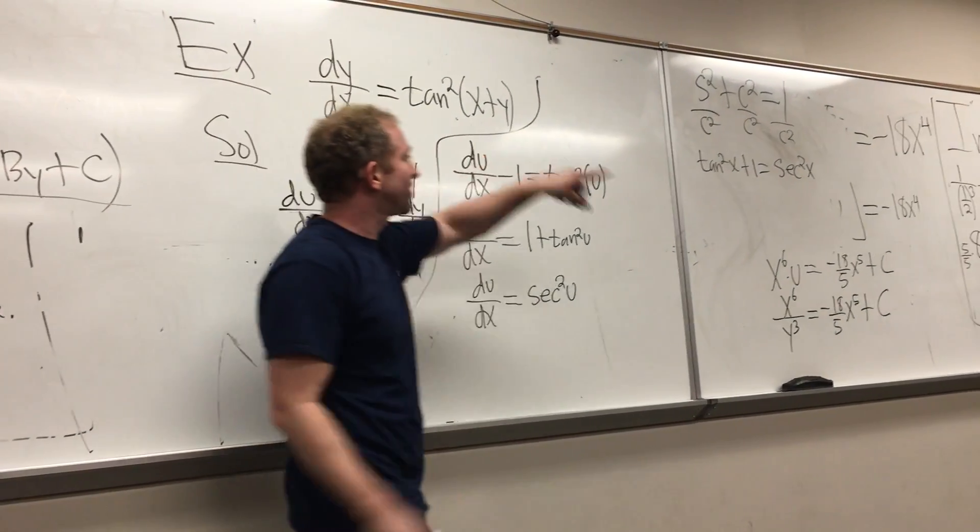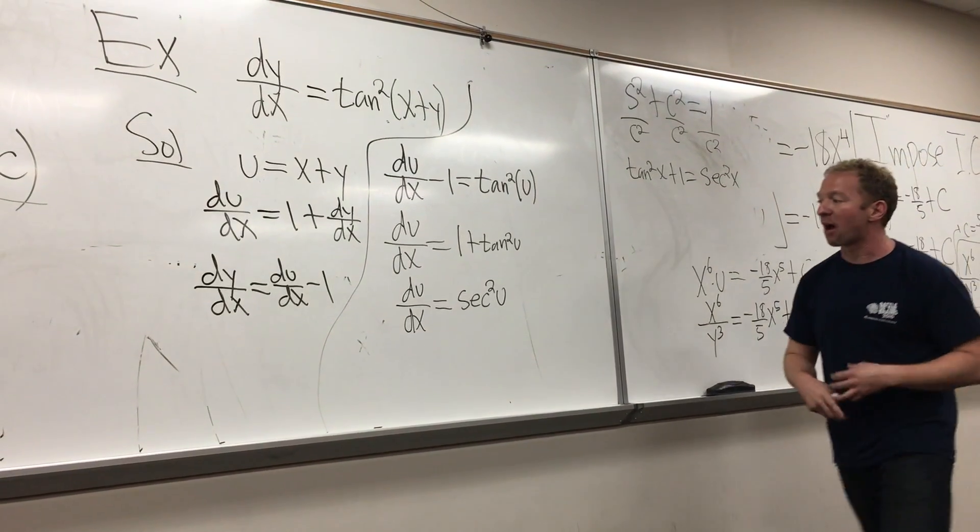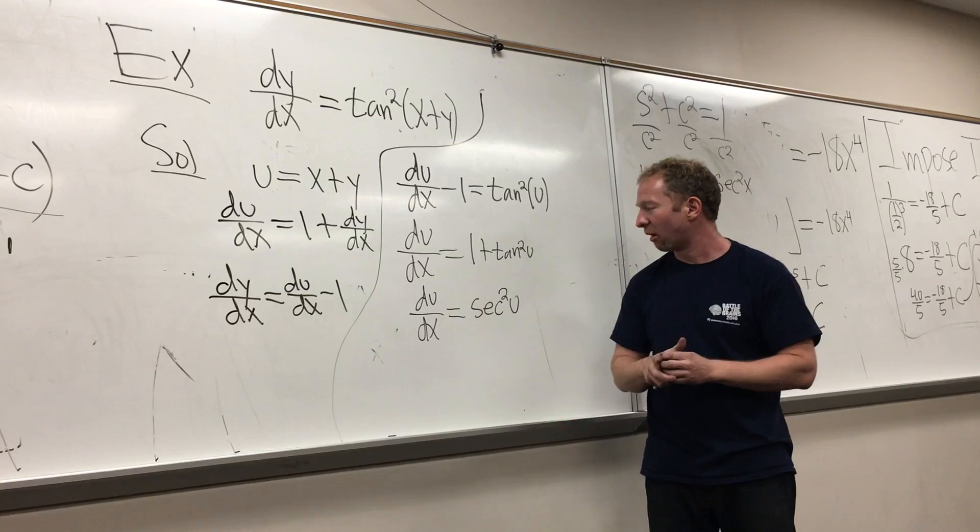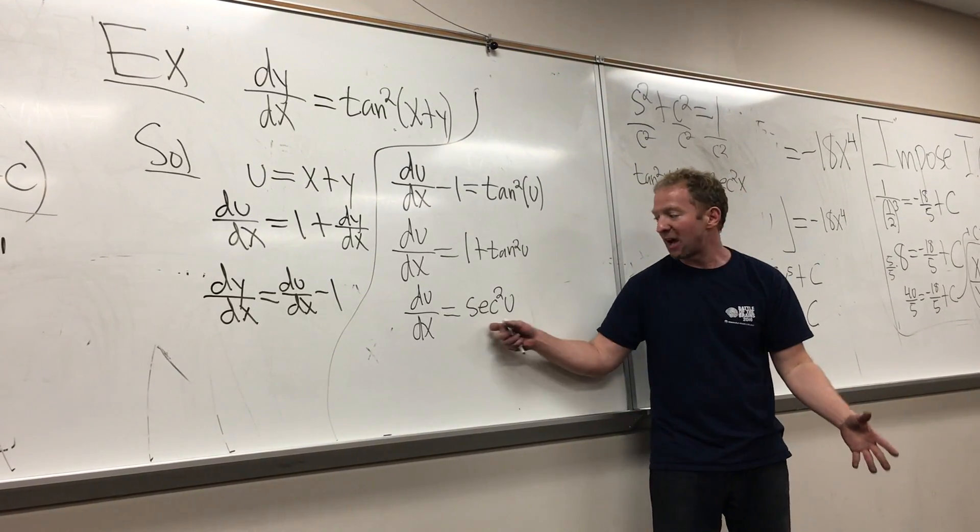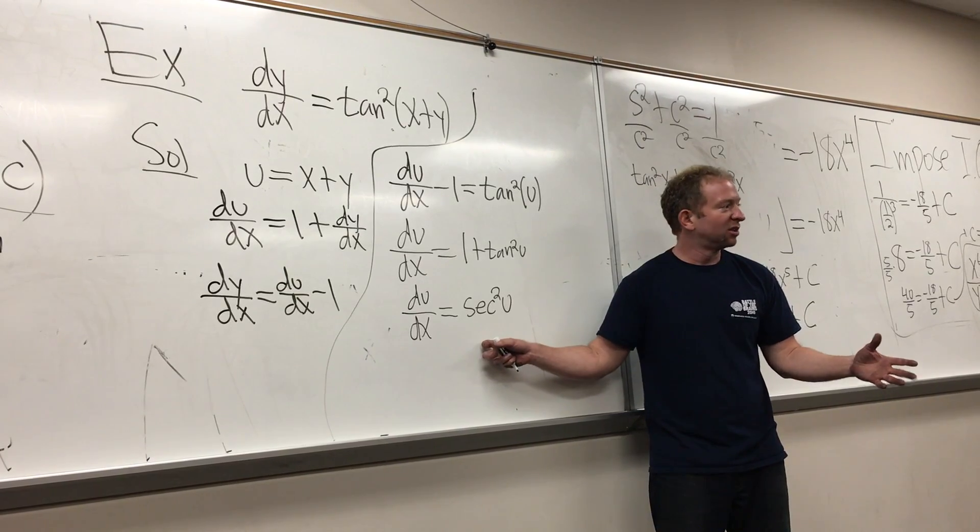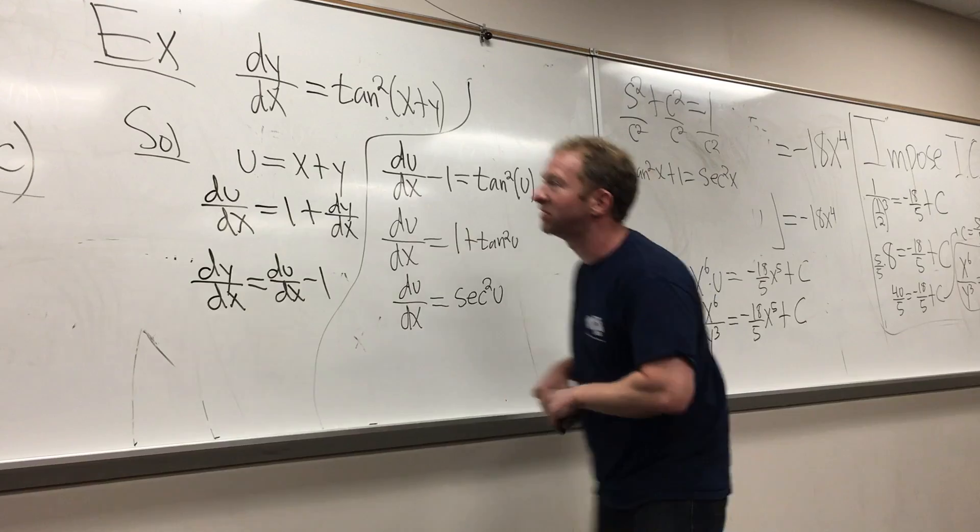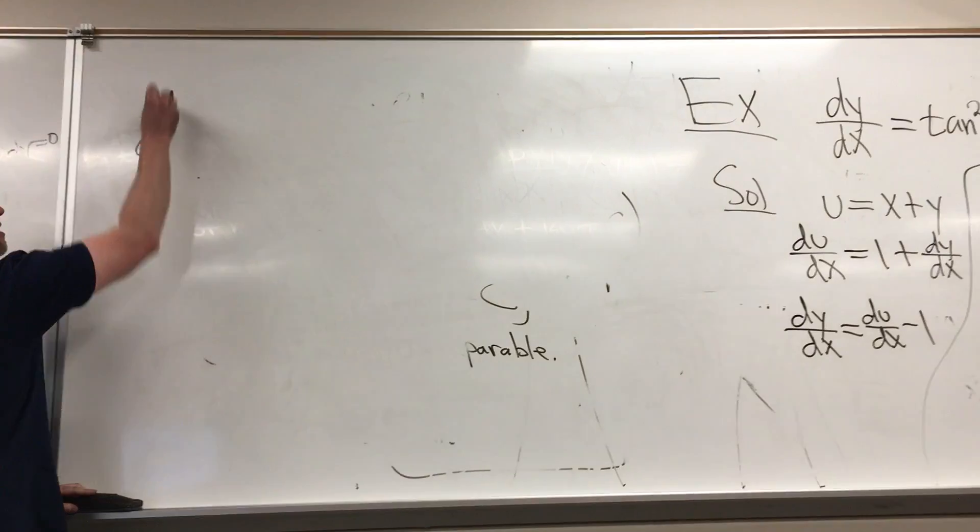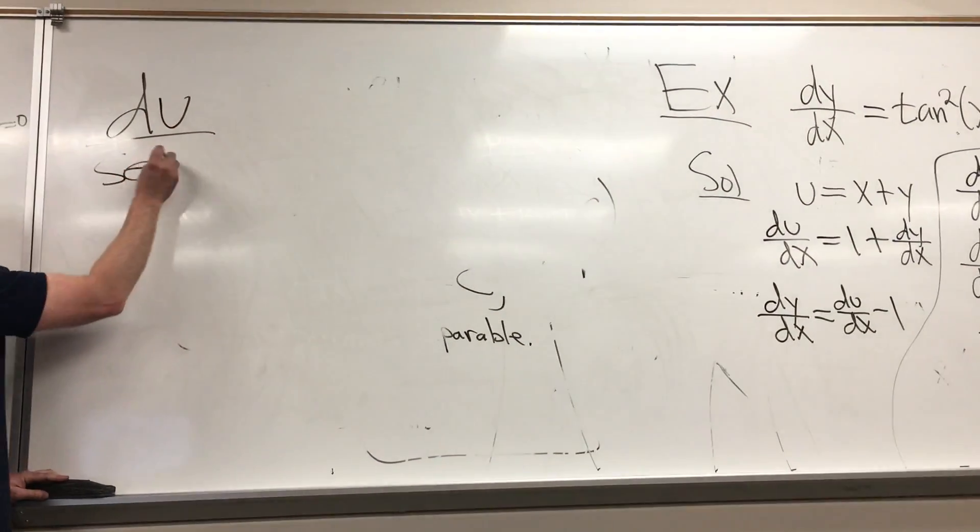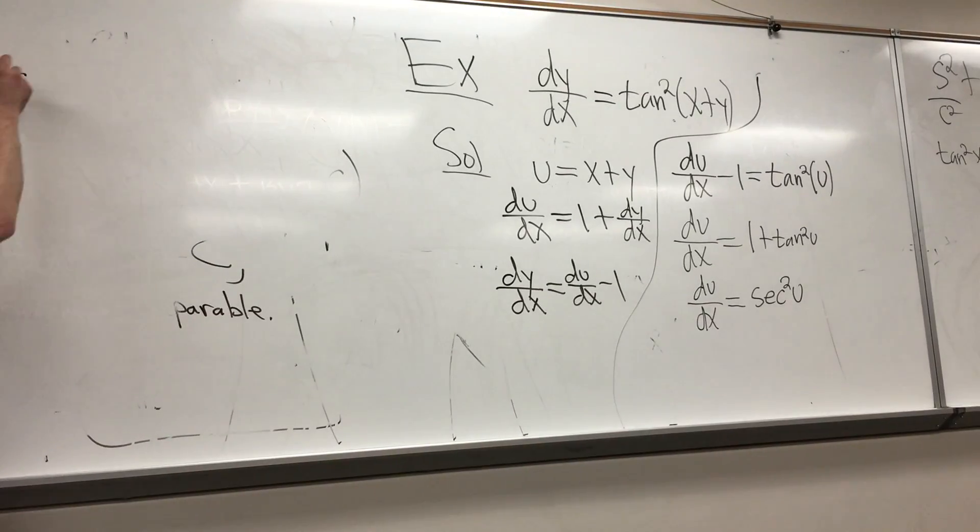From sine squared plus cosine squared equals 1, the world follows. You can do so much with that identity. And now we're ready to, oh, we got to separate it, don't we? Yeah. We have to divide by what? Secant squared. I'm going to come back over here. To divide by secant squared. So we get du over secant squared of u equals dx.